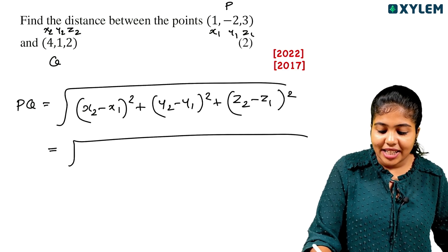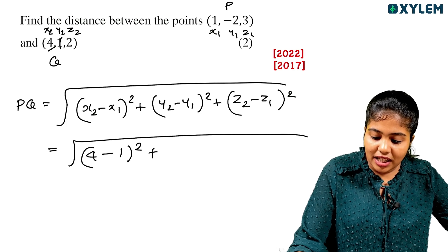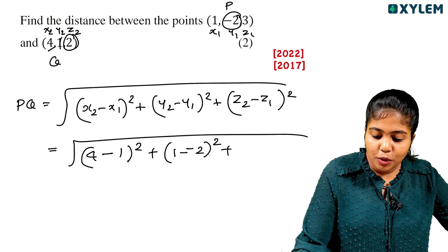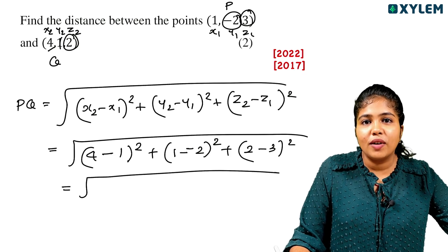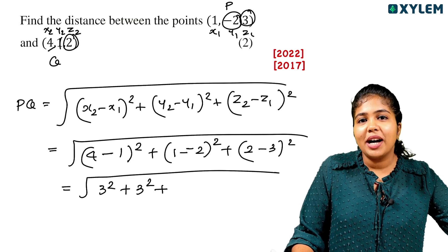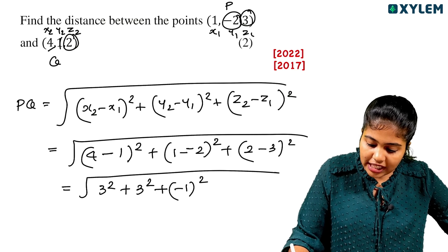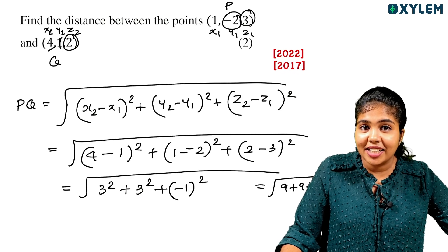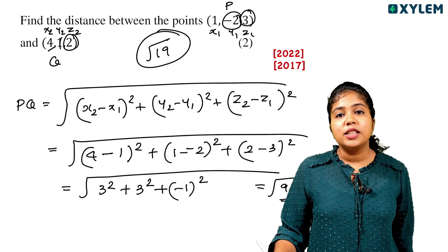Let's say points P and Q. Using the equation: root of (x2 minus x1)² plus (y2 minus y1)² plus (z2 minus z1)². x2 is 4, x1 is 1, so 4 minus 1 whole square. y2 is 1, y1 is minus 2, so 1 minus minus 2 whole square. z2 minus z1 is 2 minus 3 whole square. That gives root of 3² plus 3² plus (minus 1)², which is root of 9 plus 9 plus 1, equals root 19.